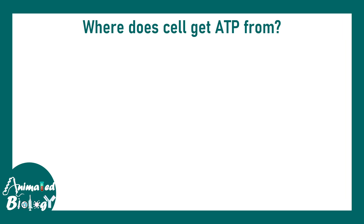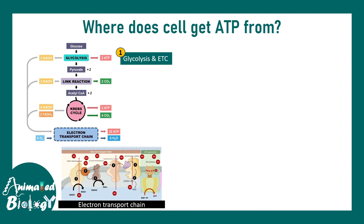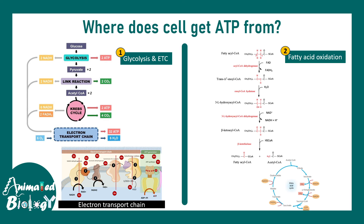Where does the cell get ATP from? One of the major sources of ATP is glycolysis and the electron transport chain. Under fed conditions, when glucose and nutrients are abundant, the cell makes ATP using glucose. But in a fasted state, the cell breaks down existing molecules such as fat to generate ATP. ATP is required whether you are in a fasted or fed state.